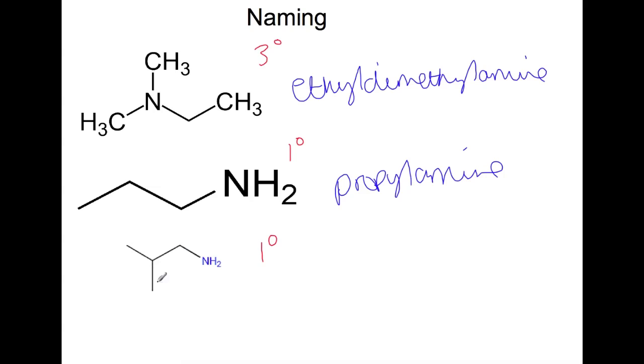Finally, this one has a branch, so here we have one, two, three carbons, so that would be based on propane. But we also have this methyl branch on the second carbon. If we count from where the amine is, we've got one, two, so this will be 2-methyl propyl amine.